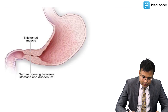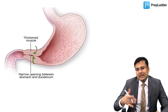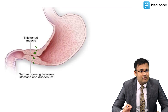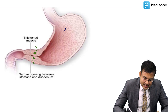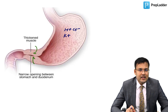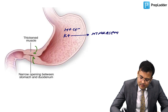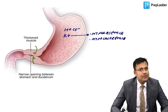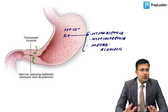The child is normal at birth. After four to six weeks, there is hypertrophy of circular muscle fibers near the pylorus. Just after breastfeeding, the patient has multiple episodes of non-bilious vomiting. The vomitus contains HCl, mucus, and potassium. This leads to loss of potassium (hypokalemia), loss of chloride (hypochloremia), and metabolic alkalosis.